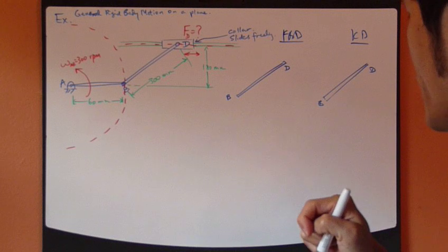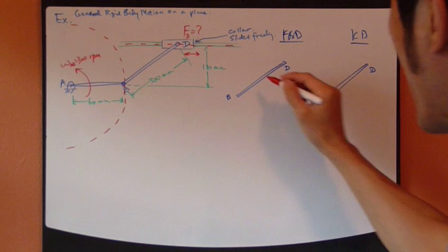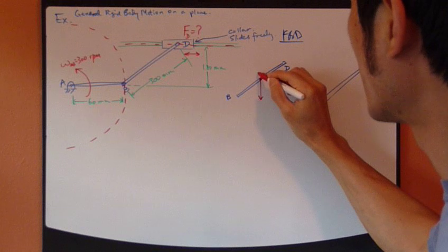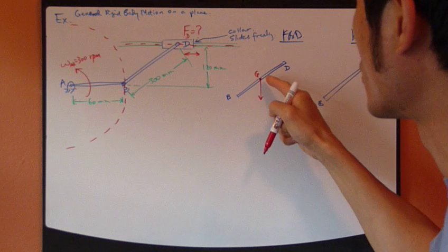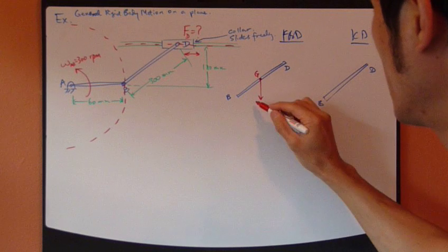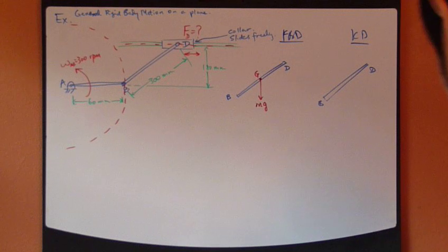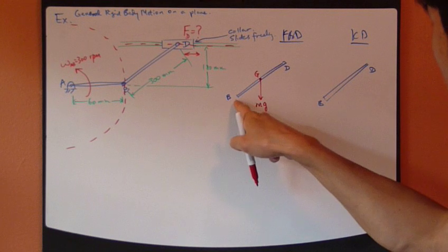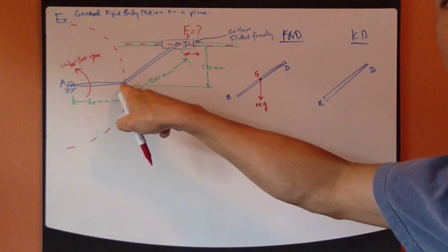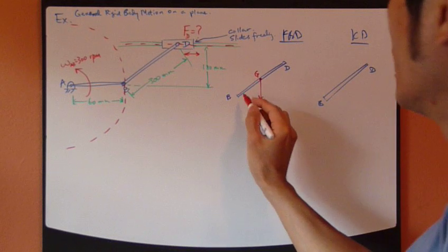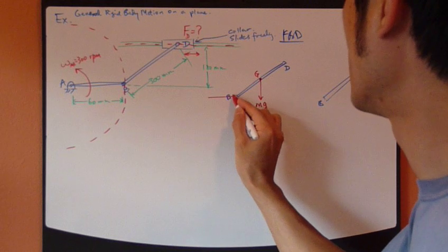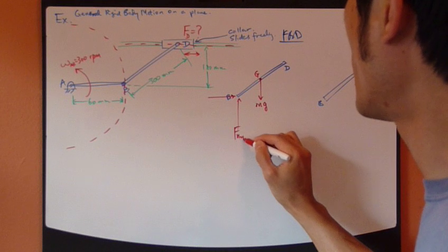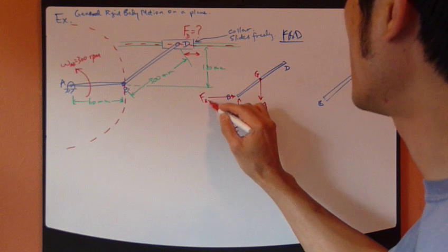So at this moment right here we have the weight of BD acting at the center of gravity which is halfway down in BD. So that's mg. And we have reaction forces at point B. This is a link, so reaction forces FBY, FBX.